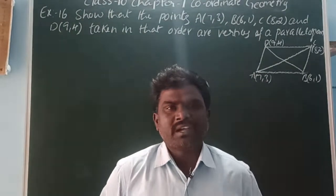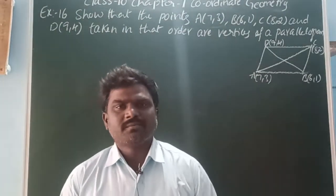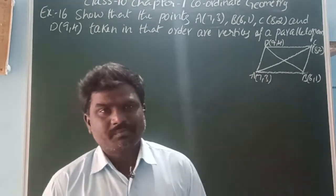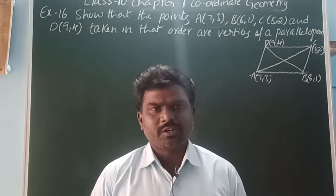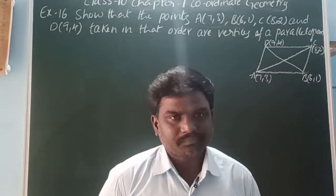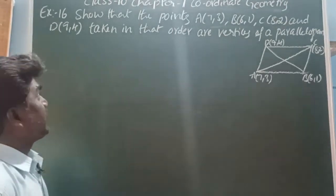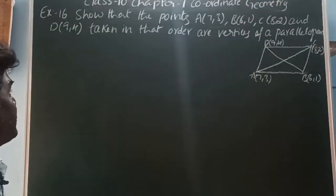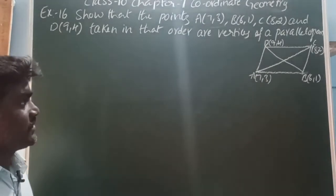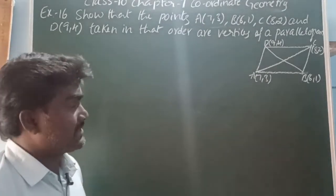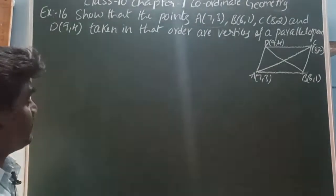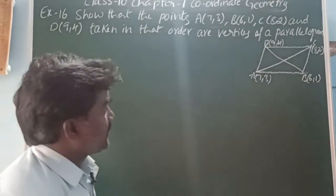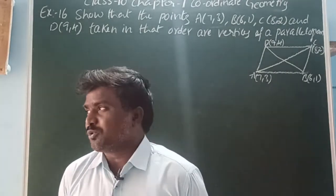Hi, hello! Welcome back to our YouTube channel. This is Balakrishna. Before you go to the videos, please subscribe to our YouTube channel and share it with your friends. Today I am going to explain Class 10th Chapter 7 Coordinate Geometry. Example 16: Show that the points A(7,3), B(6,1), C(8,2), and D(9,4) taken in order are vertices of a parallelogram.